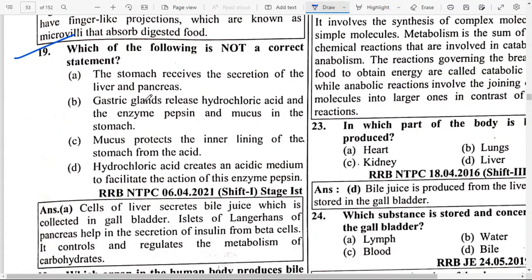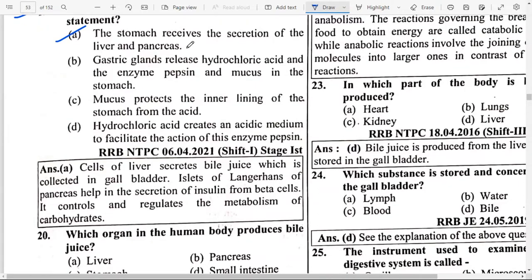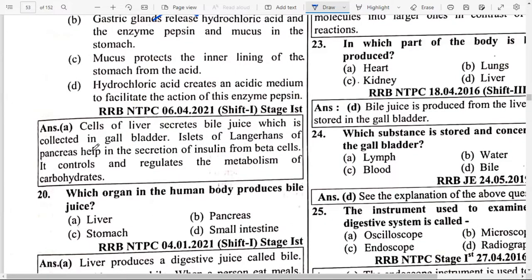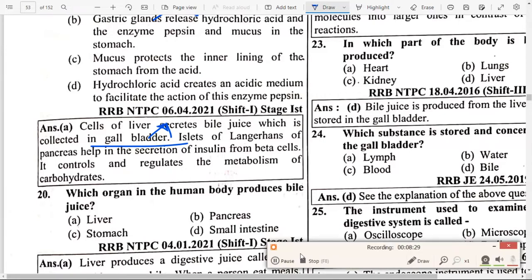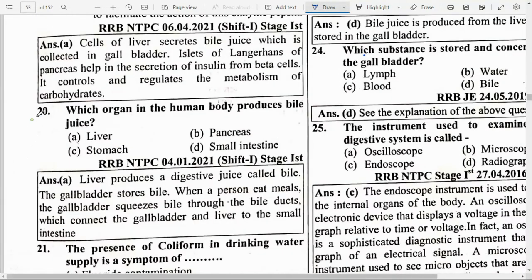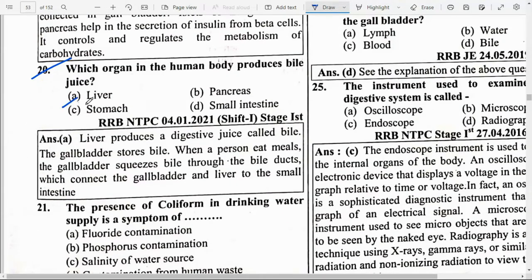Next: Which of the following is not a correct statement? The answer is that the stomach receives the secretion of liver and pancreas — this is NOT correct. The cells of the liver secrete bile juice which is collected in the gallbladder. The Islets of Langerhans of the pancreas help in secretion of insulin from beta cells — this is a very important exam point: insulin is secreted via the Islets of Langerhans.